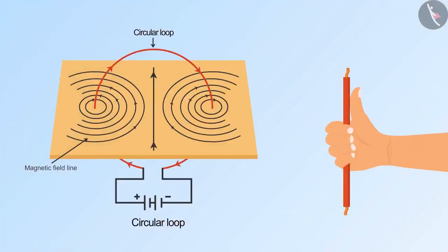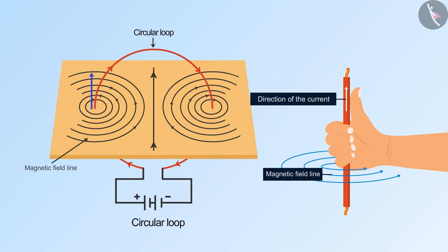If we apply the right hand thumb rule here, then we can get the direction of magnetic field lines easily. At the surface, current is flowing in the upward direction, then the fingers wrapping the conductor will tell the direction of the field lines.